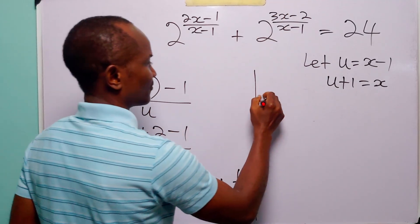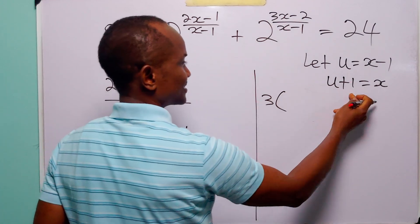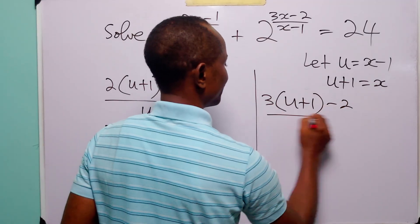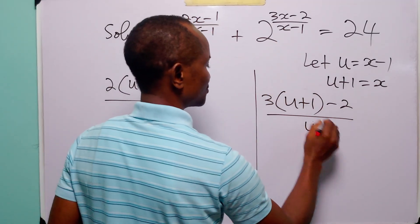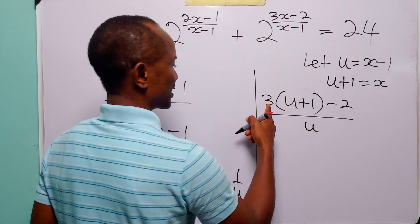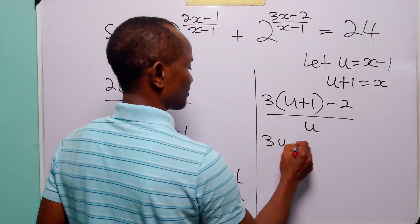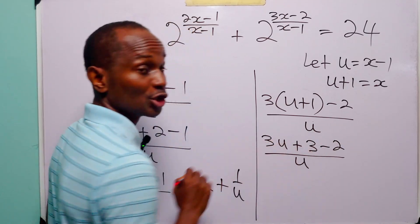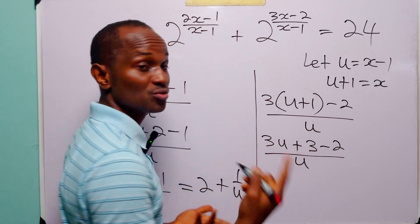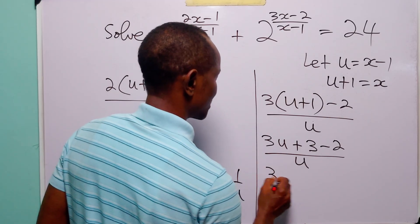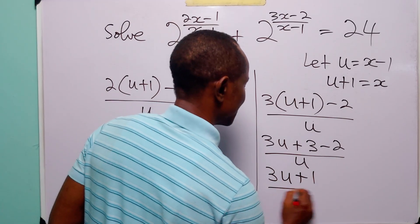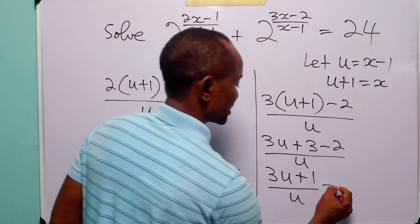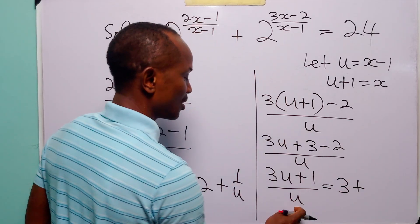In this case, we have 3 multiplied by x, where x is u plus 1, minus 2 divided by x minus 1, which is equal to u. Opening this bracket, we have 3 times u plus 3 times 1 minus 2 divided by u. 3 minus 2 is 1. So here we have 3u plus 1 divided by u. Once more, 3u over u is equal to 3 plus 1 over u.